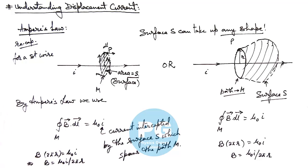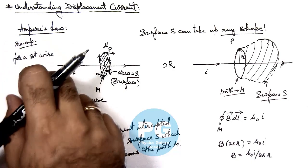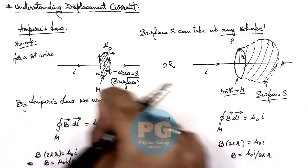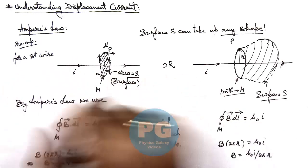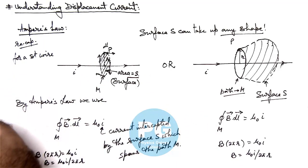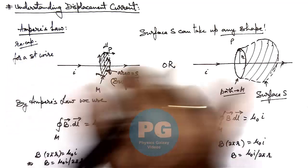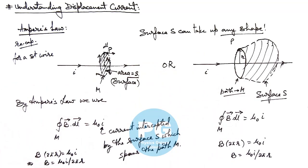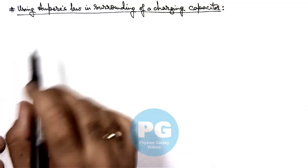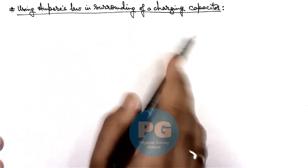By changing the shape of the surface which spans path M, on which we are applying Ampere's law, the result does not change. The value of magnetic induction must remain the same no matter what shape of surface S is taken. You can also review Ampere's law from previous chapters — for a current-carrying sheet, solenoid, or any other case — the shape of surface can be changed and the result remains the same.